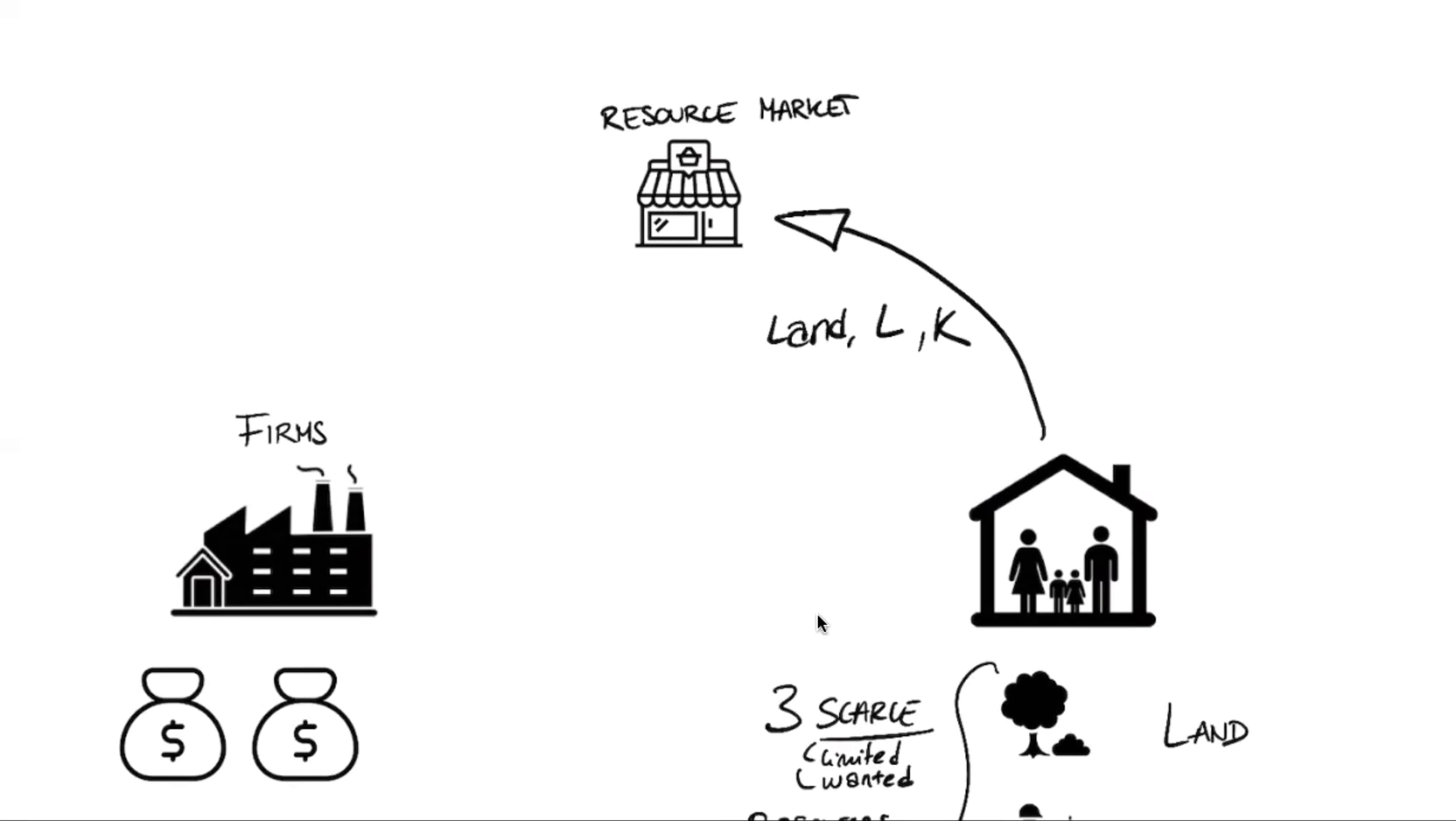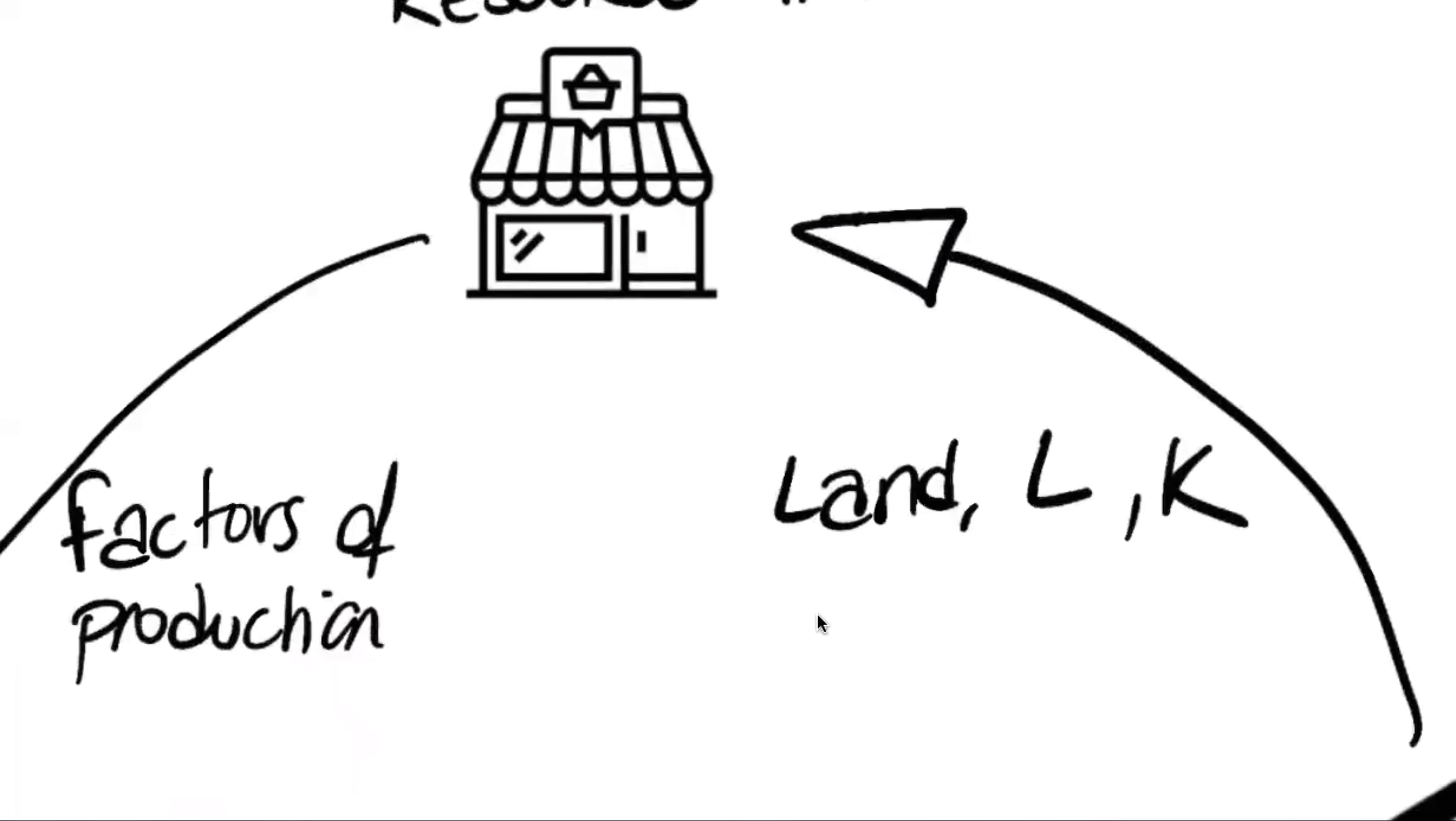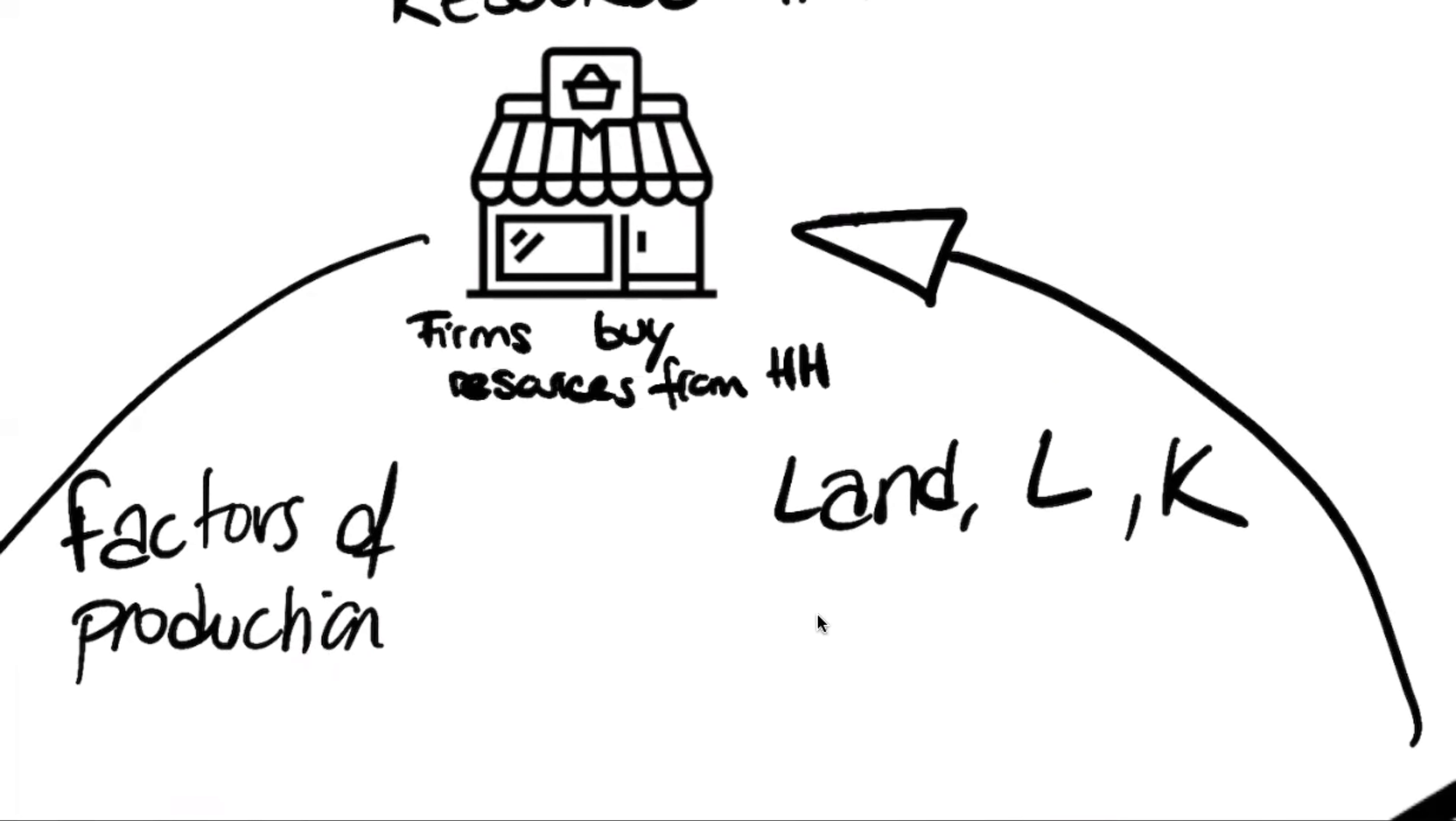And the firms, they use that land, labor, and capital as factors of production. So what they do basically is that the firms buy from households this factor of production. So they buy resources from households. So that's the first step into our circular flow.